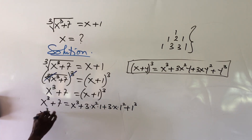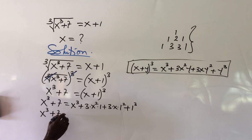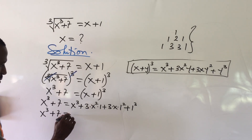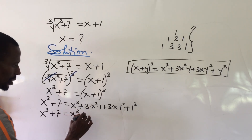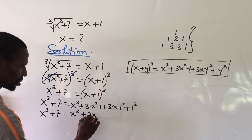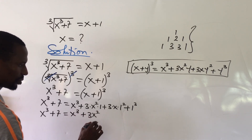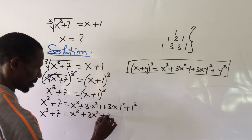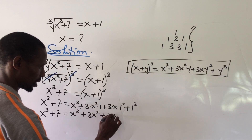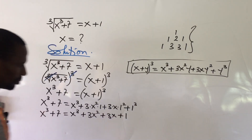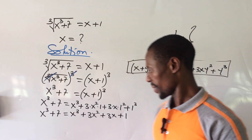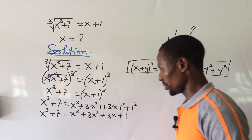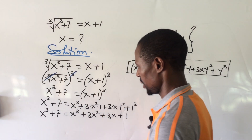Simplifying, we have x³ + 7 on the left-hand side equal to x³ plus 3x² plus 3x plus 1.